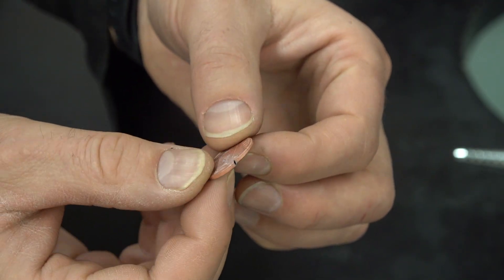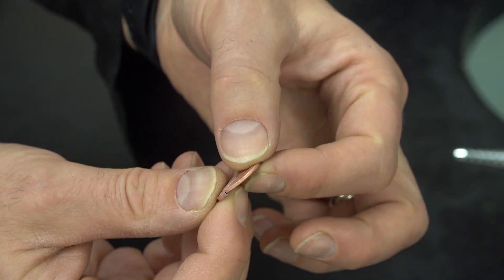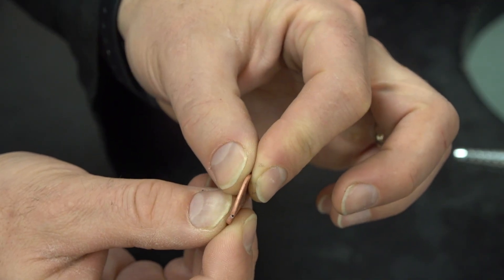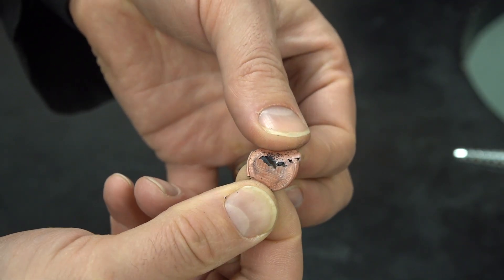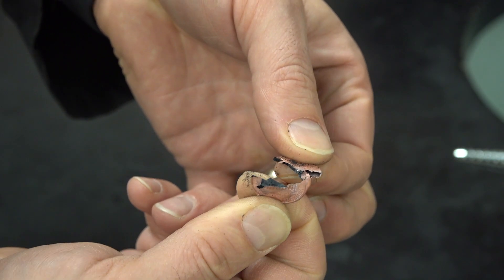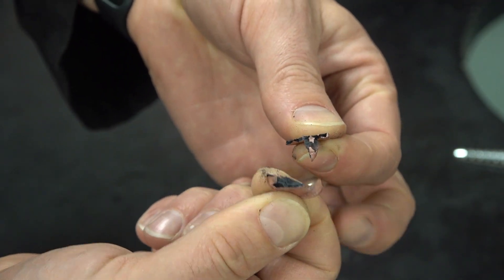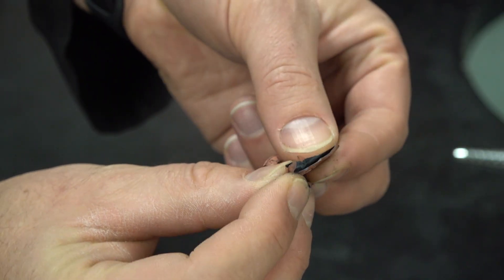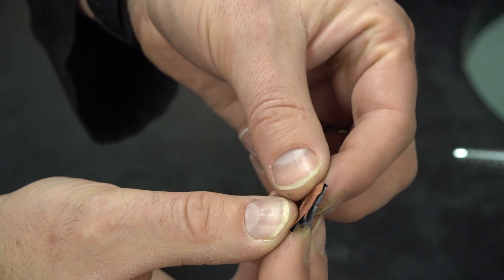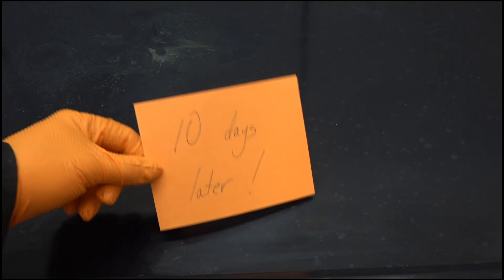This is what we get after we let it sit in there for a while. This is the post-1982 penny. Look at this. Look at that. It's hollow. There's still some zinc inside, but for the most part, it's hollow. You can see that copper plating on the outside of the penny. I decided, well, let's leave these in for a good long time. How about 10 days and see what happens.